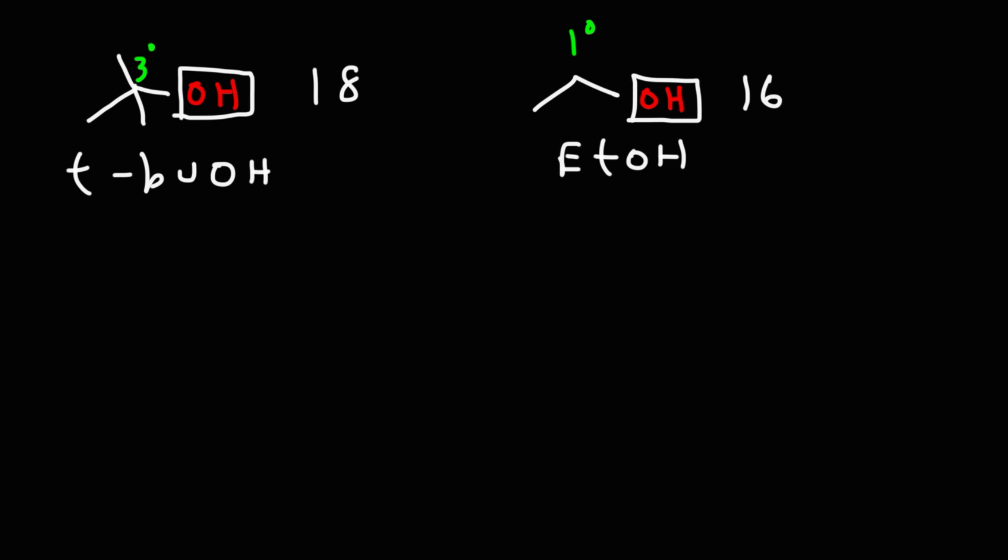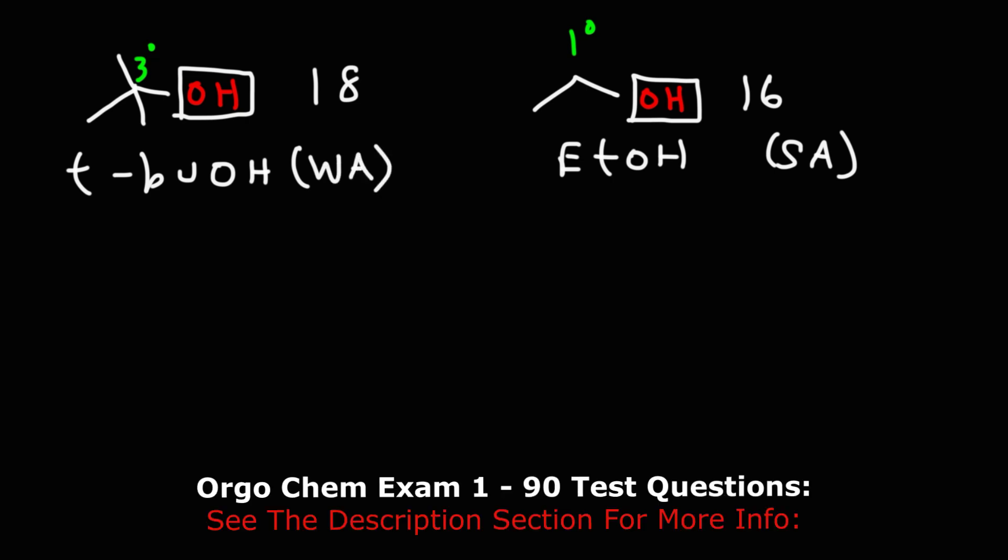Well let's take a look at the conjugate base. Keep in mind the stronger the acid the weaker the conjugate base. So because ethanol is the stronger acid, the conjugate base of ethanol, ethoxide, is going to be the weaker base. And since tert-butanol is the weaker acid, the conjugate base tert-butoxide is going to be the stronger base.